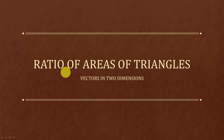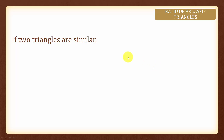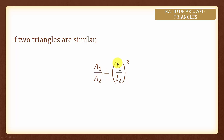In this topic, we are going to look at the ratio of areas of triangles in vectors. Let's look at the area of similar triangles. If two triangles are similar, then A1 over A2 is equal to L1 over L2 squared.